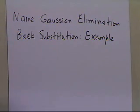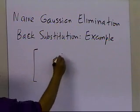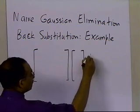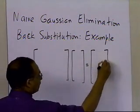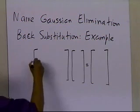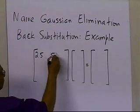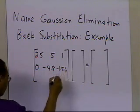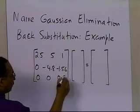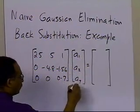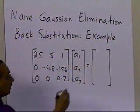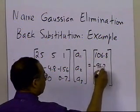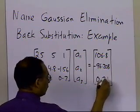The forward elimination part, for the example which we just did, resulted in the coefficient matrix being turned into an upper triangular matrix, so that we can apply the algorithm of back substitution. This is what we obtained: 25, 5, 1; 0, minus 4.8, minus 1.56; 0, 0, 0.7, and we had three unknowns a1, a2, a3, and the right-hand side values 106.8, minus 96.208, and 0.76.